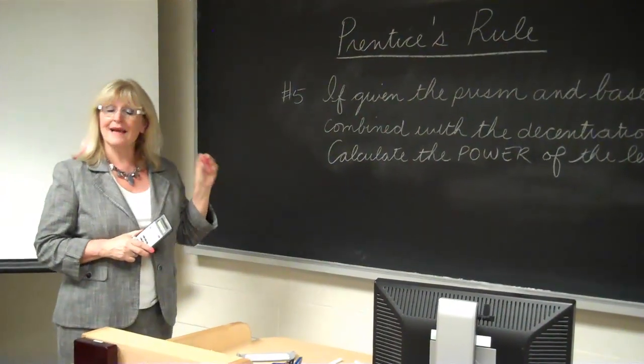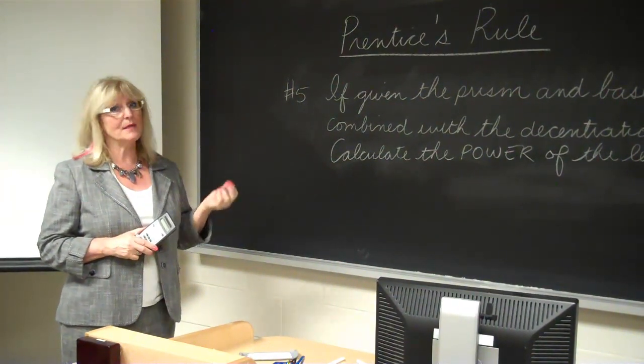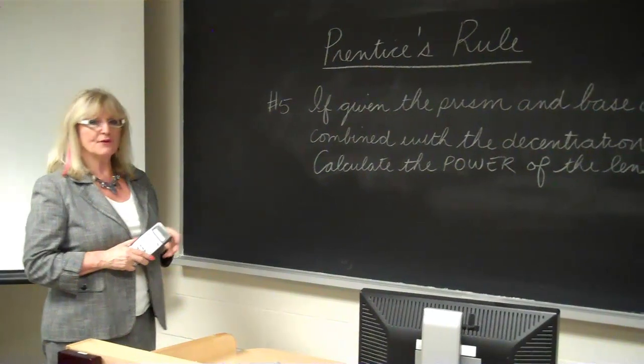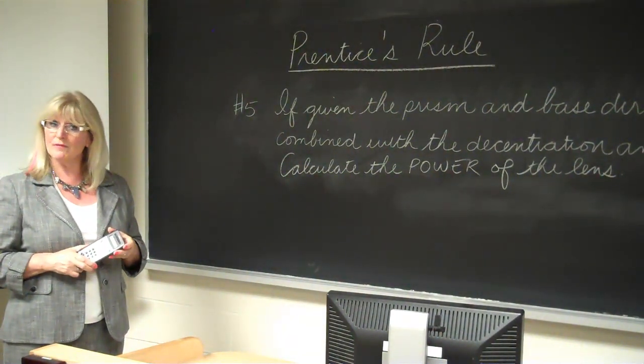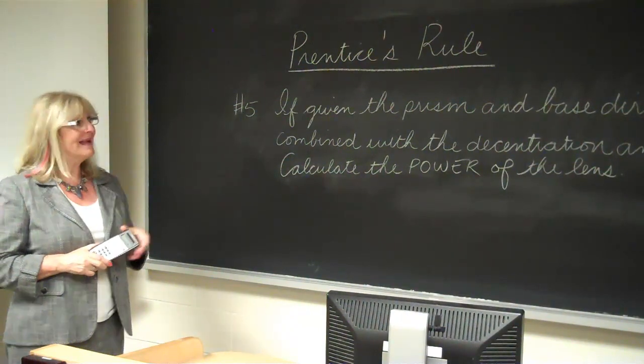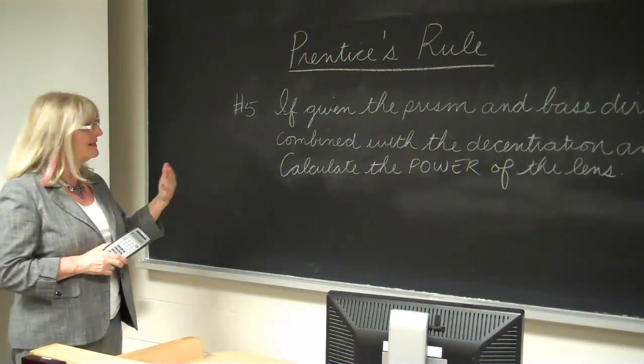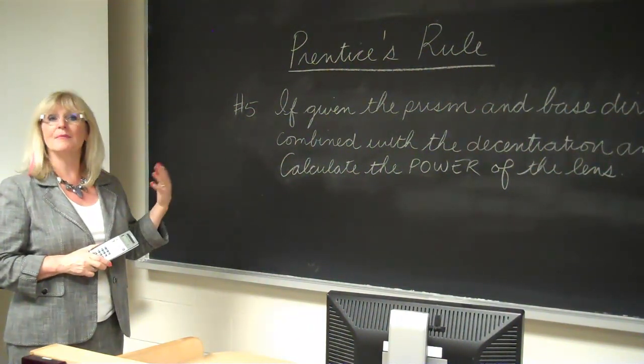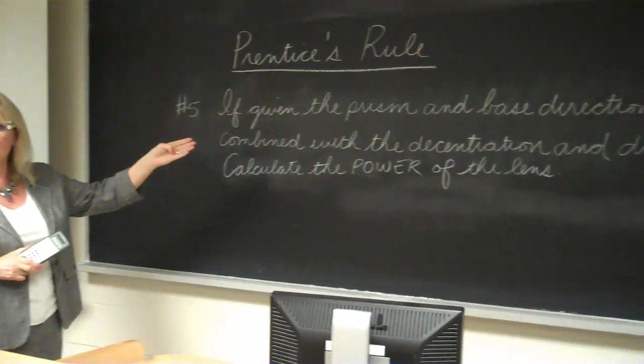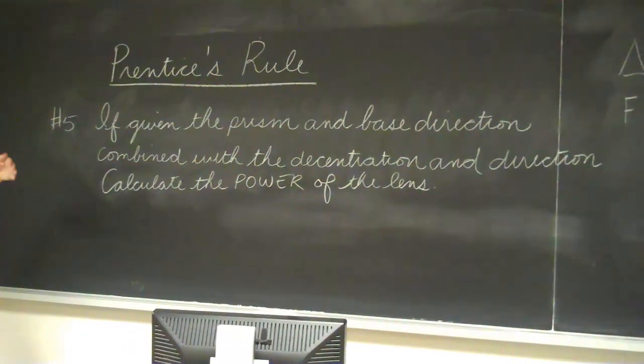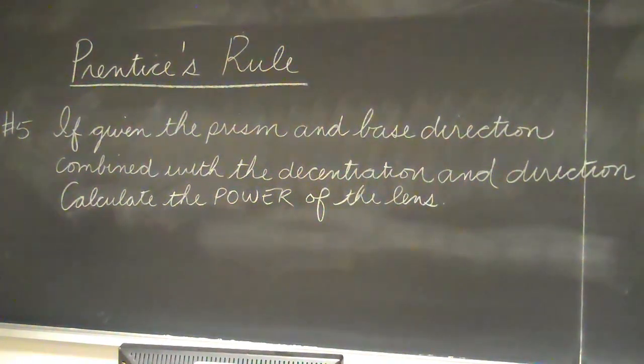Now we're on the last application of Prentice's rule, application number five. The first three are dealing with calculating prism, number four was dealing with decentration, and the last one will enable us to calculate the power of the lens. If given the prism and the base direction, combined with the decentration and direction, we should be able to calculate the power of the lens.